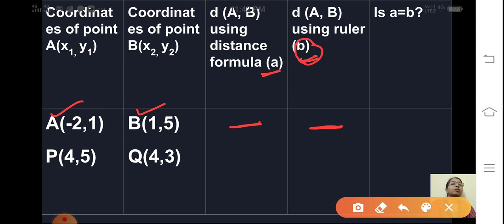Now last column you compare both the values. Value by using formula and then by using ruler. So what you will find? You will get both the values equal. In this way we can prove distance formula by activity method.